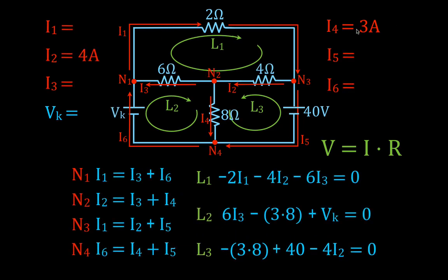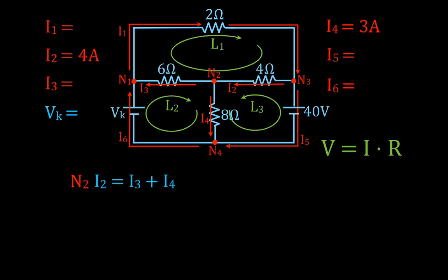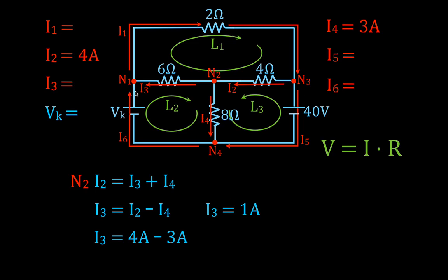Now we know I2 and I4. We can use one of our current rules — the equation for node N2 has both I2 and I4 in it, so we can solve for I3. Rearranging, I3 equals I2 minus I4, which is 4 minus 3. The current through this branch, I3, is 1 ampere. Again, it's positive, so it's flowing in the correct direction we chose.